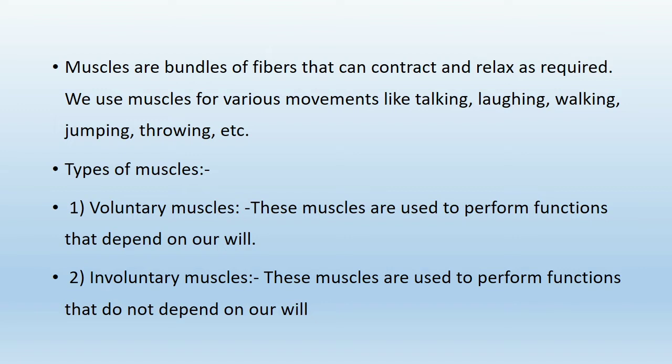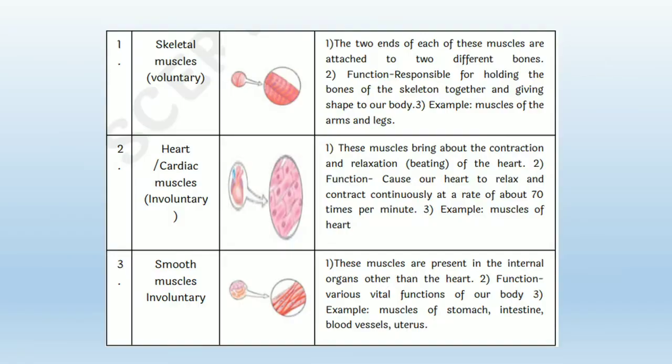First, Voluntary Muscles — these muscles are used to perform functions that depend on our will. Second, Involuntary Muscles — these muscles are used to perform functions that do not depend on our will. There are a number of muscles like Skeletal Muscle, Heart Muscle which is also called Cardiac Muscle, and Smooth Muscles. These are some involuntary and voluntary muscles which perform different types of functions.